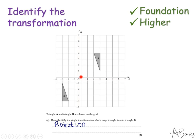Often the centre of rotation is the origin, so always start there — it's going to be somewhere between the two shapes. On this example the origin is a good place to start: trace around A, turn the tracing paper, and it does land on B, so the centre is the origin, which I can write as the coordinate (0, 0). For rotations I also need to give how far it has been turned and in what direction. This one is a 180-degree turn, and because it's 180 degrees I don't need to give a direction as it doesn't matter which way.